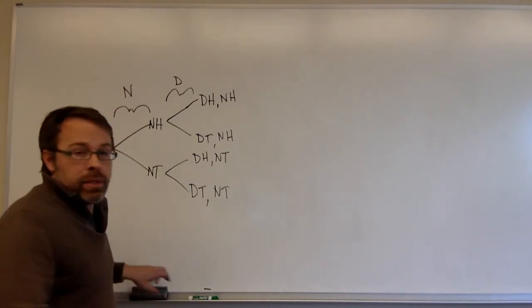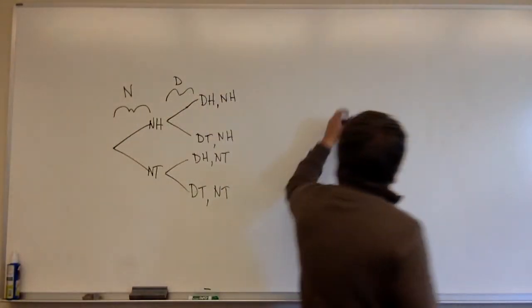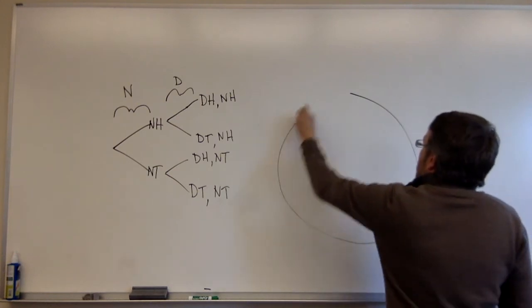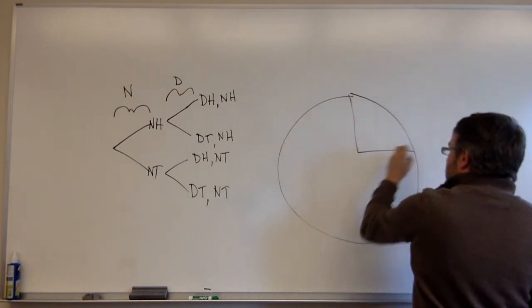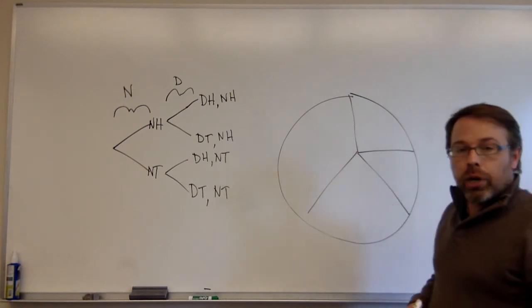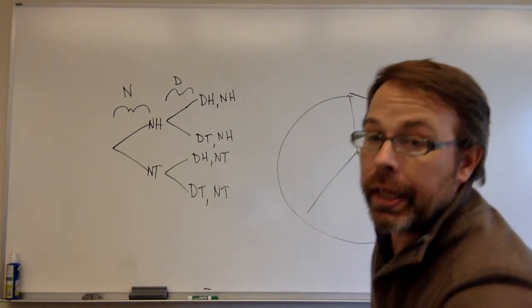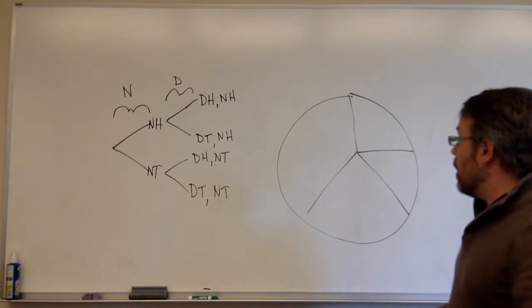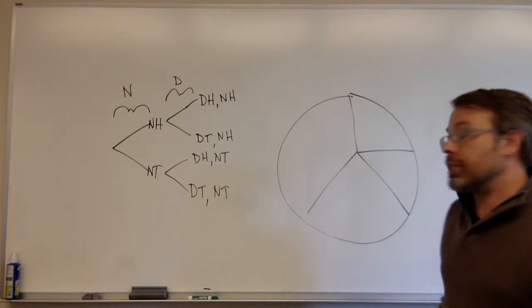So the other thing I want to talk about is the pie chart method. In a pie chart, it'll be subdivided, and each one of these pieces of pie will represent some possibility. This could be nation of origin in San Francisco.